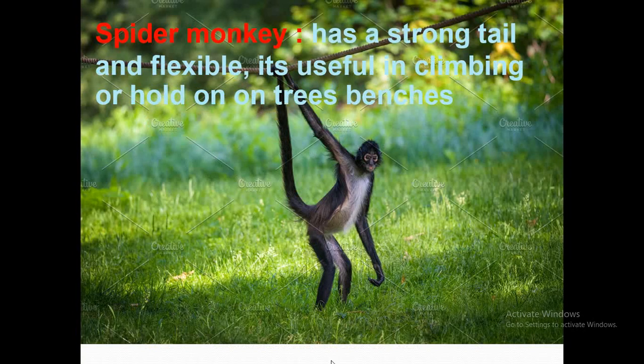Here we can see the spider monkey. The spider monkey has a strong and flexible tail that is useful for climbing and holding onto trees. We can see its tail and its arms — all of these are structural adaptations. They help it move from one tree to another to get food and survive.